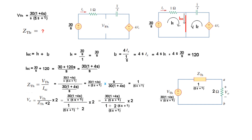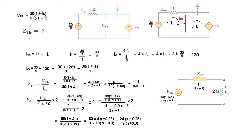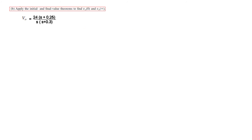Using the voltage divider — total voltage divided by total impedance, multiplied by the impedance across which we want the voltage — and substituting values step by step, we find V_o(s) = 24(s + 0.25) / [s(s + 0.3)]. This matches the answer given in the book.